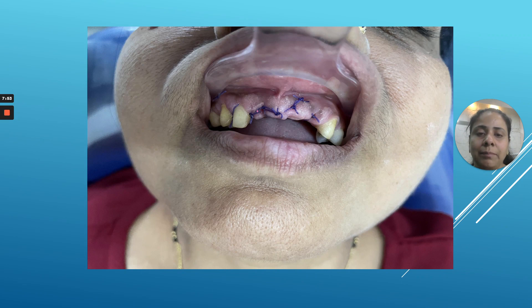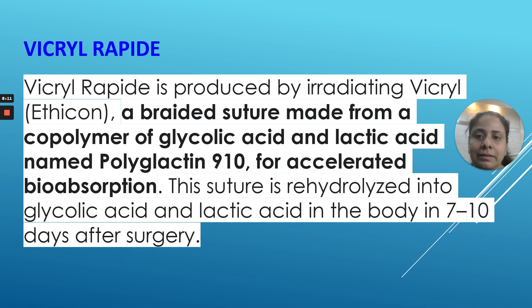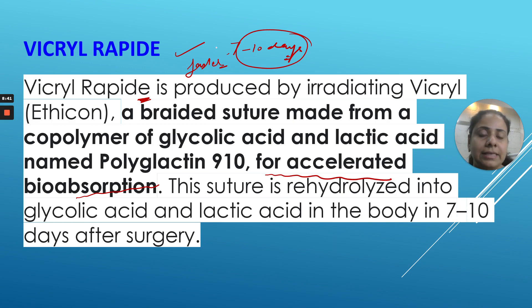This is how Vicryl Plus looks. There is another variant called Vicryl Rapide, which has a much faster hydrolysis and resorption action — accelerated bioabsorption. It is ideal for areas where the suture should be resorbed within 7 to 10 days, but only where tissues will regain strength in that timeframe. If tissues need more healing time, use regular Vicryl or Vicryl Plus instead.